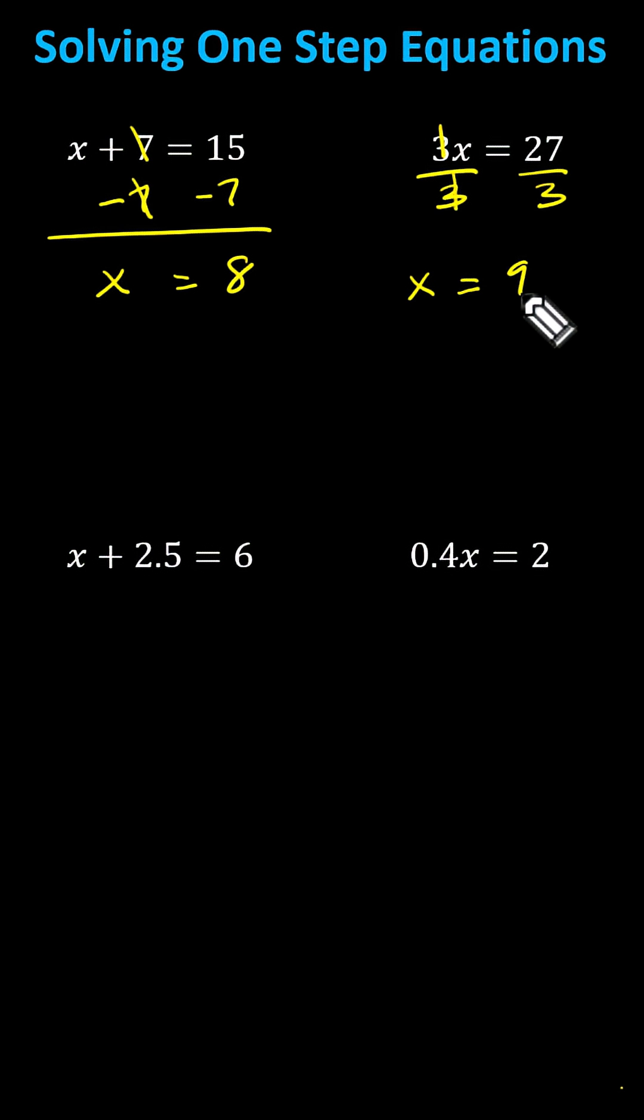Next, we have x plus two and five tenths equals six. To solve for x, we need to undo plus 2.5 by performing the opposite operation to both sides.